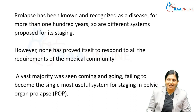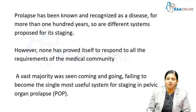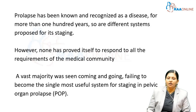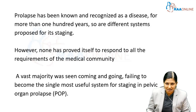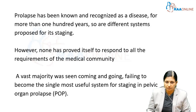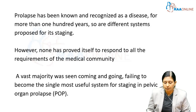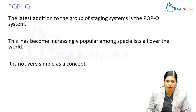Prolapse has been known and recognized as a disease for more than 100 years, and different systems have been proposed for the staging of prolapse. However, none of the systems — from Shaw's classification to POPQ to Bad and Walker — have proved themselves to respond to all the requirements of the medical community. The vast majority of scoring systems were seen coming and going, failing to become the single most useful system for staging pelvic organ prolapse.